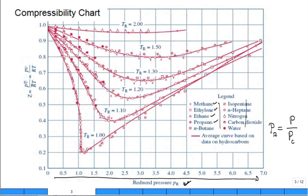Now, before we jump into it, let's take a look at what's on the y-axis. What's on the y-axis? Z. What's the name of Z? Compressibility factor. Is Z dimensionless or does it have dimensions? It's dimensionless.